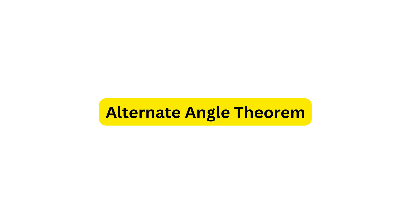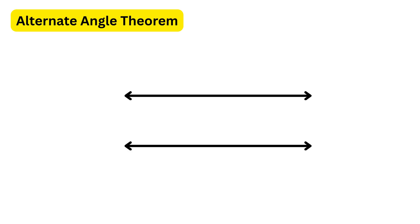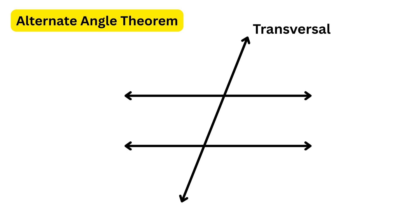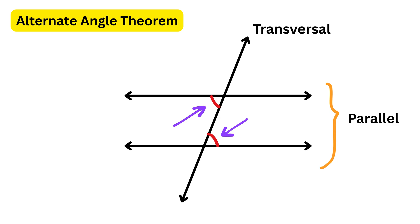Next is the alternate angle theorem. When a transversal — a line that intersects two or more other lines at distinct points — cuts two parallel lines, the alternate angles formed are equal. These angles lie on opposite sides of the transversal but inside the two parallel lines. For example, if one alternate angle measures 65 degrees, the other will also measure 65 degrees.